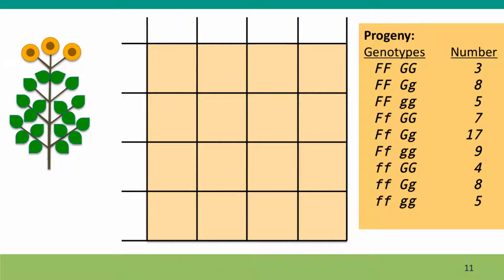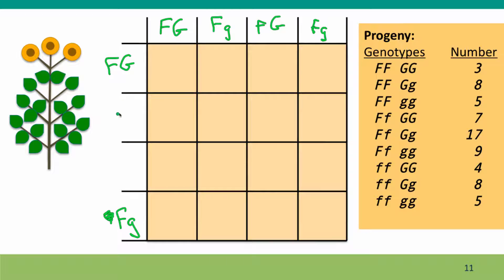So in this case, we can say: we know there must have been big F, big G gametes, and little f, little g gametes, big F, little g, and little f, big G, etc. And you can then see that because, if the parent was indeed big F, little f, big G, little g, each of these would have been present in equal proportion — there would have been a quarter of each of these.